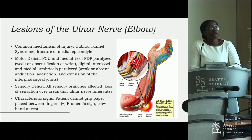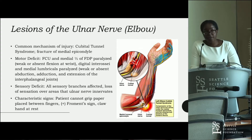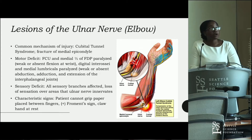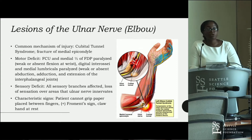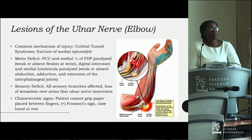Lesions of the ulnar nerve at the elbow usually present with paralysis of the muscles it innervates and sensory loss in the skin it supplies. Characteristic signs include inability to grip paper between the fingers due to paralysis of the dorsal interossei muscles, a positive Froment's sign due to inability to adduct the thumb, and a claw hand at rest due to paralysis of the medial lumbricals.